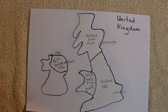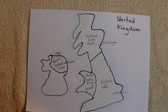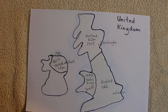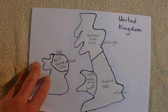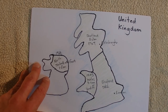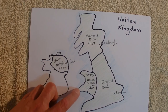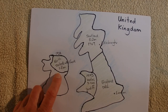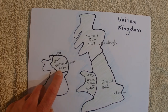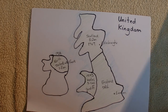England obviously is the biggest country by population, and their native language is English, which is what we speak in Australia. Scotland — they mainly speak English, and some speak a Scottish Gaelic language. Wales has their own Celtic language called Welsh, but they also speak English. And in Northern Ireland, the Protestants would all speak English, but some of the Catholics in Northern Ireland may speak a bit of Irish.